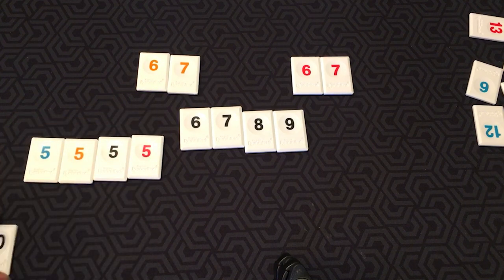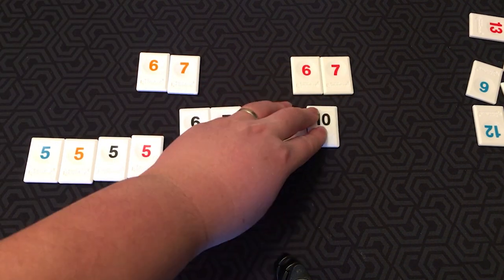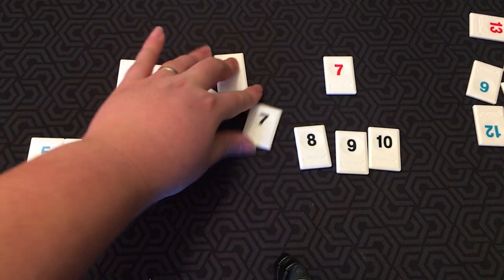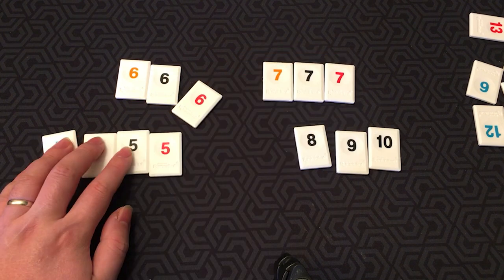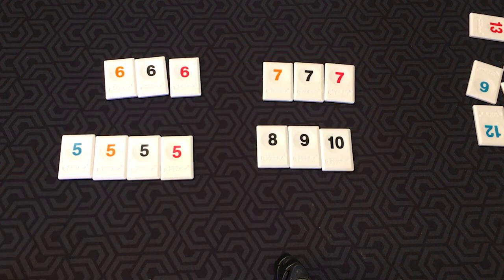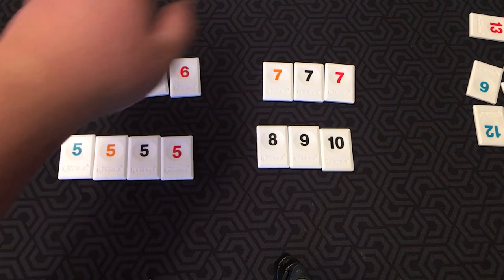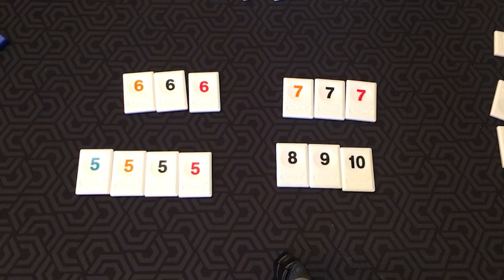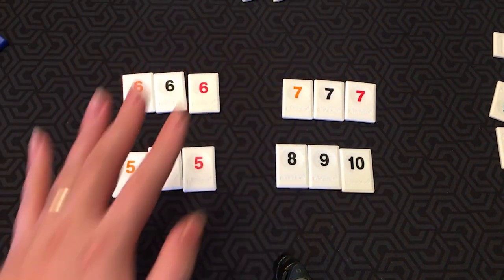I could then take this 10, put it on the end here, and then I can take these 6s and group these together, and 7s, and group those together. As long as no tiles are left alone, you can manipulate these however you want. So you don't need to know all the names of those, but this just shows you just how many different moves you can do, as long as you can manipulate them so that they settle into sets by the end.